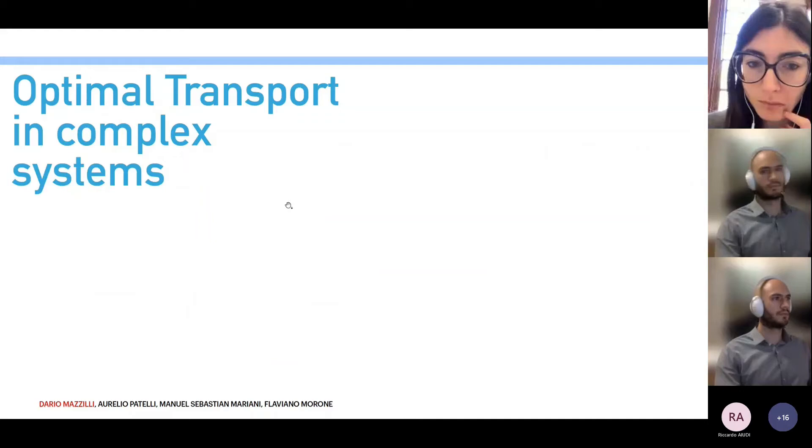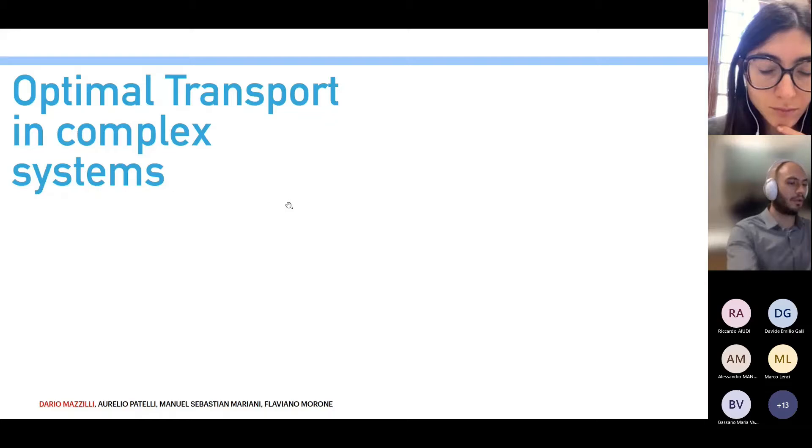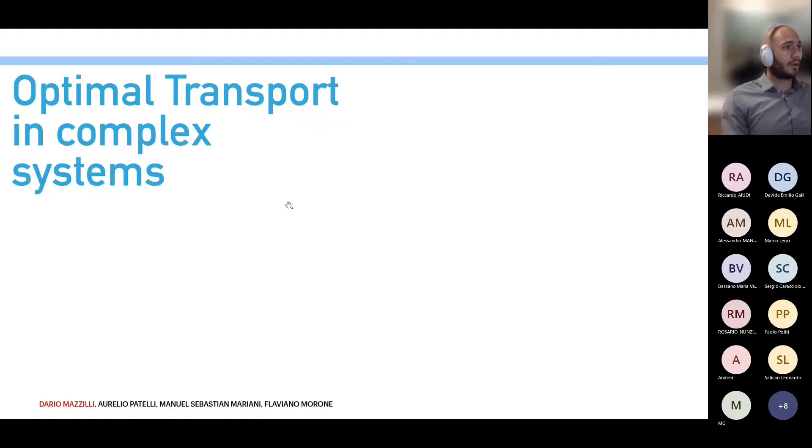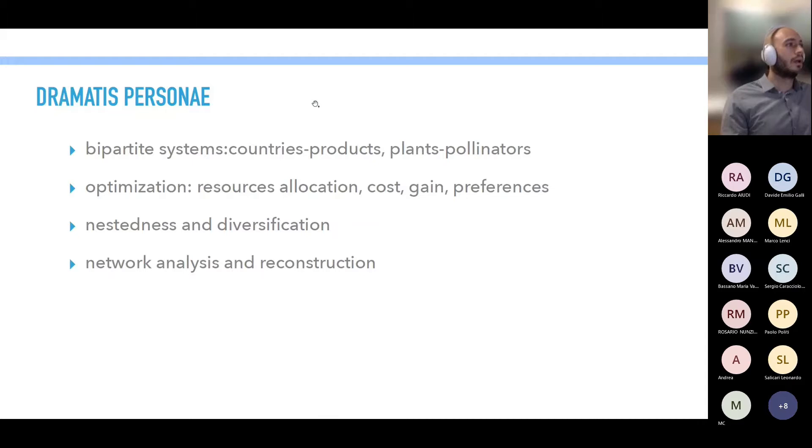Okay, you can see my screen, right? So hello everyone, thank you for having me and giving me the opportunity to present this work. Today I'm going to talk about optimal transport in complex systems. You may find this talk interesting if you work on bipartite systems. I'm going to present some examples about countries and products for international trade or ecological systems for plants and pollinators, but I'm going to try to convince you that this problem can be framed in many other systems. If in your system you have some kind of optimization, resource allocation, limited resources, cost or gain preferences, or if nestedness and diversification are considered very important properties, or if in general you work with network analysis on real networks or reconstruction.